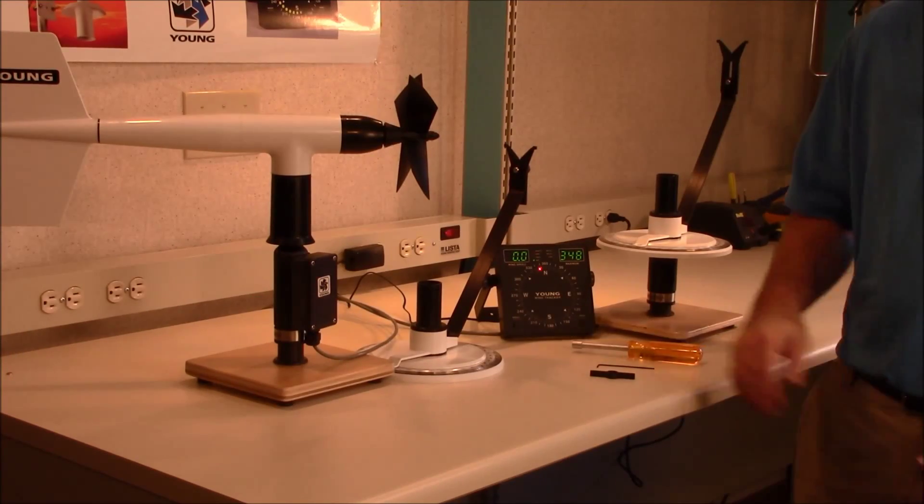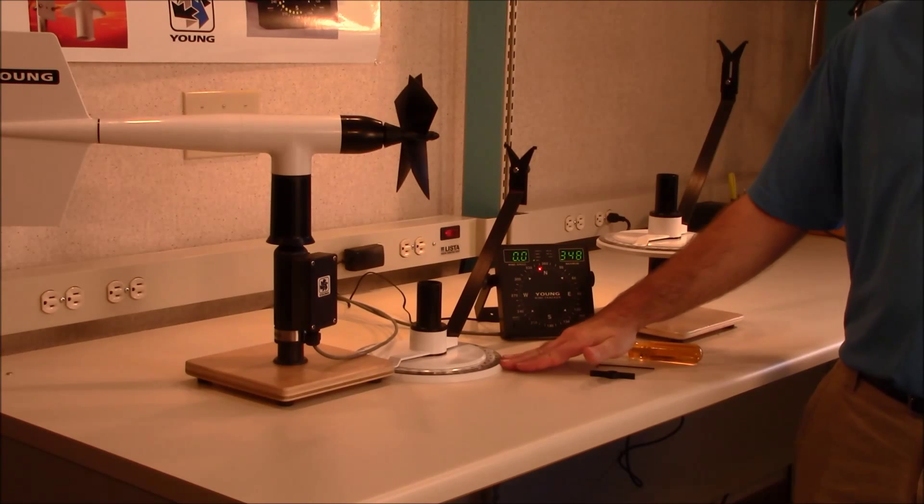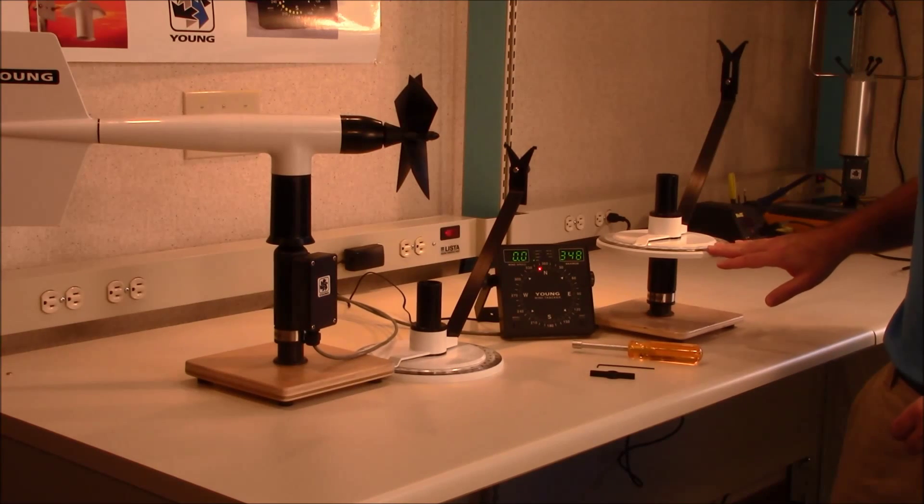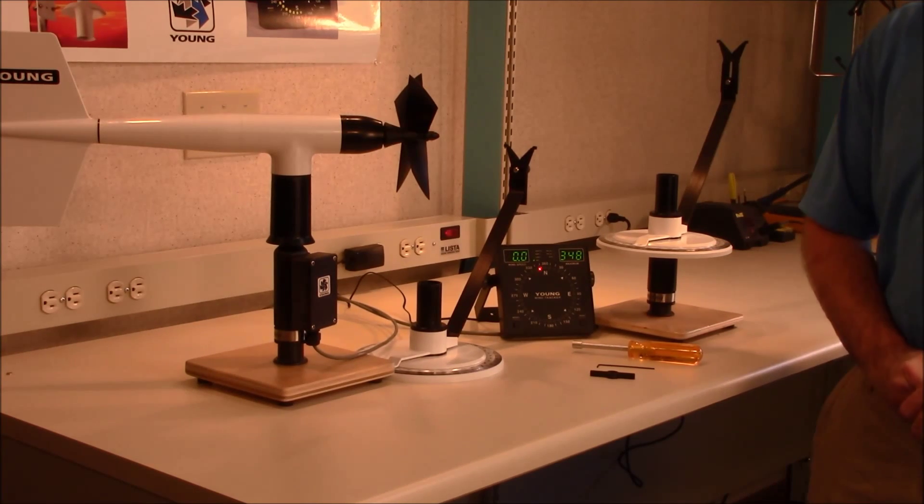Two models are available. The bench stand is meant for lab use. For applications where it is more convenient to calibrate on site, the tower mount fixture can be used directly on your permanent tower.